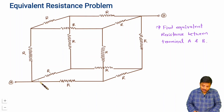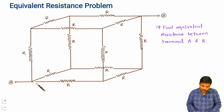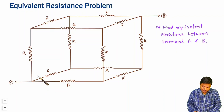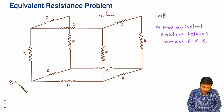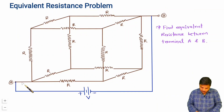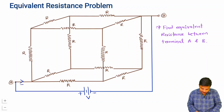You cannot solve this circuit using series-parallel or star-delta connections — going that way would involve huge calculations. Instead, consider applying a voltage V between terminals A and B, which will drive a current I through the circuit.